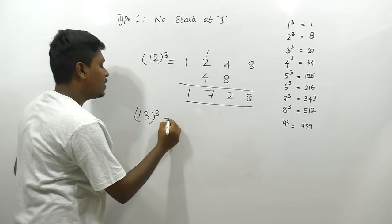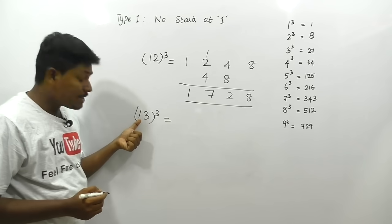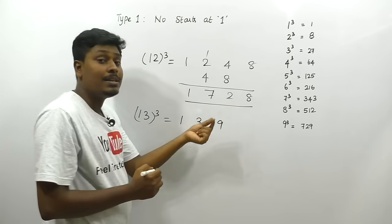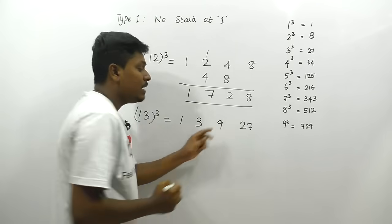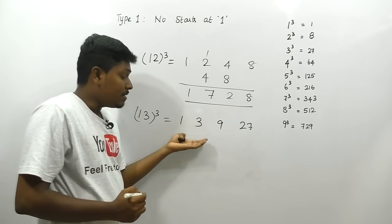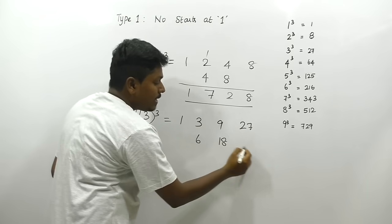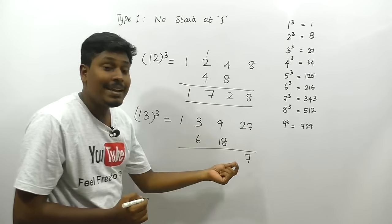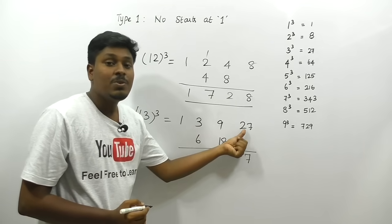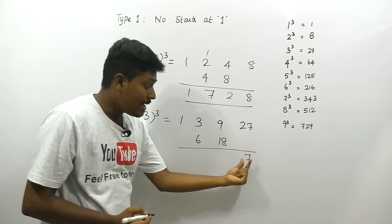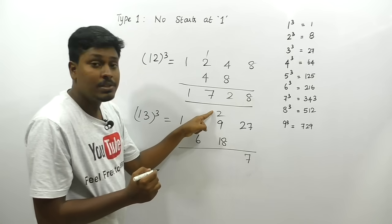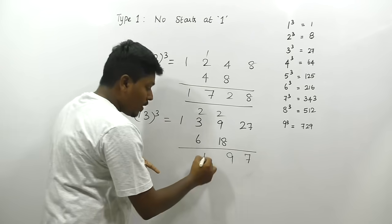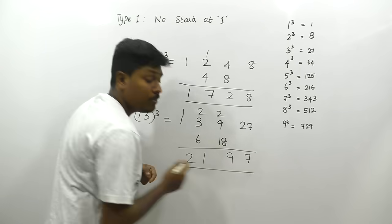For 13³ (Type 1, number starts at 1): write 1, 3, then 3² = 9, then 3³ = 27. Double the center numbers: double 3 = 6, double 9 = 18. Now add from right: write 7 from 27, carry 2; 18+2=20, 20+9=29, write 9, carry 2; 6+2=8, then 1. So 13³ = 2197.